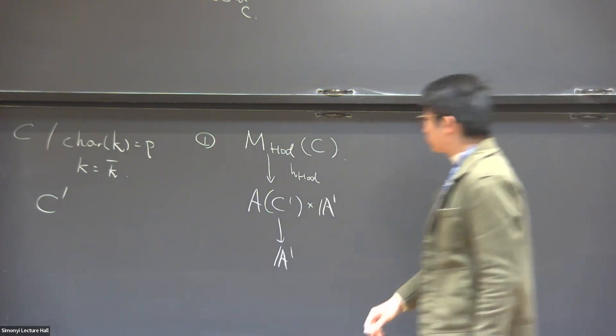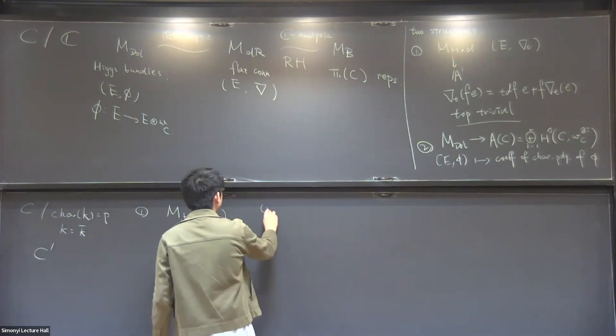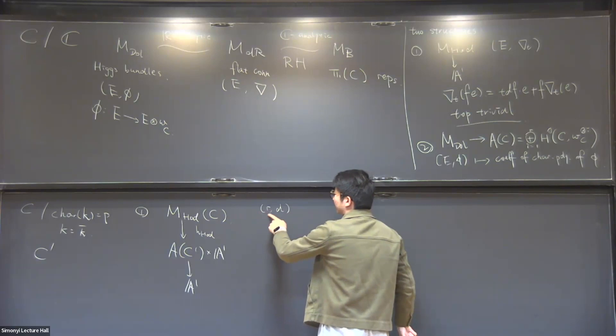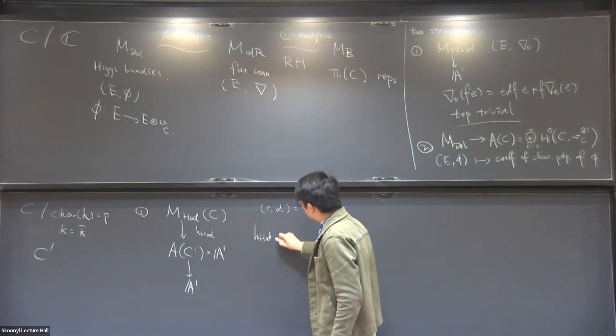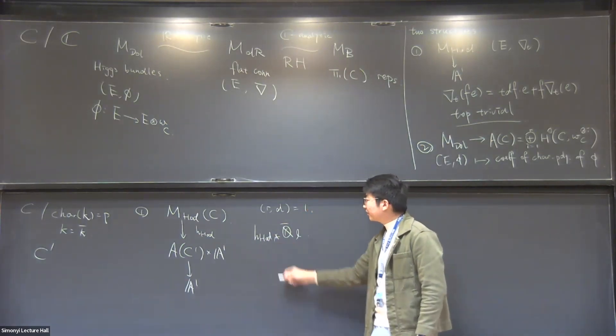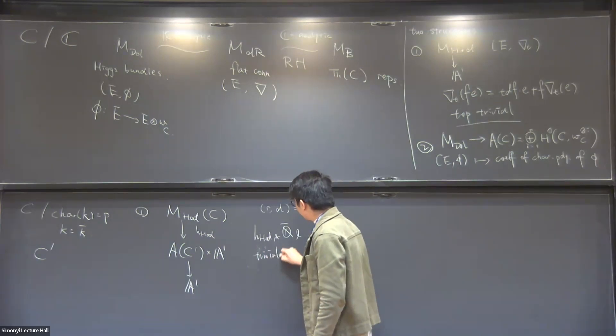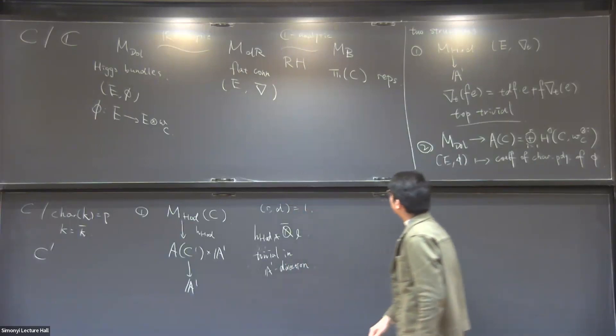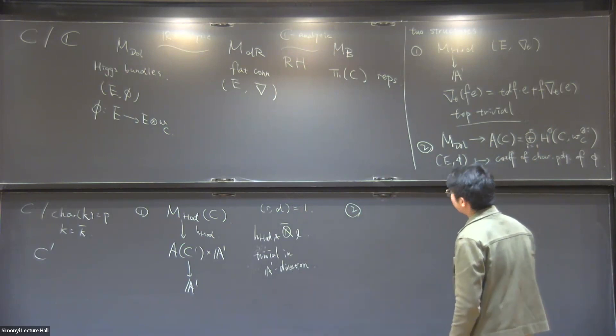If you take the zero fiber of the Hodge-Hitchin morphism you get a morphism that is not the Hitchin morphism on the nose but universally homeomorphic to the Hitchin morphism. We can duplicate this topologically trivial result, not on the nose. What we can do is that if I assume, so there are random degrees for the moduli space, if I assume the random degree is coprime, then if I take the direct push forward of the constant sheaf by the Hodge-Hitchin morphism, we can prove that it is trivial in the A^1 direction.